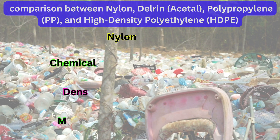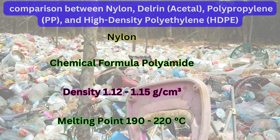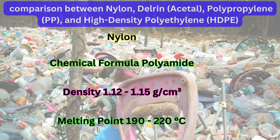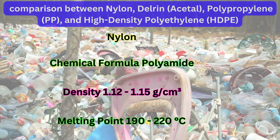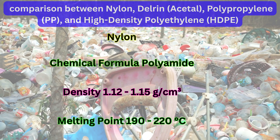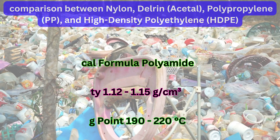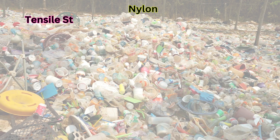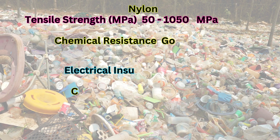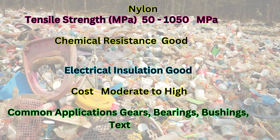Here's a comparison between nylon, delrin, acetal, polypropylene (PP), and high-density polyethylene (HDPE). Nylon — chemical formula: polyamide; density: 1.12 to 1.15 g/cm³; melting point: 190 to 220°C; tensile strength: 50 to 1050 MPa; chemical resistance: good; electrical insulation: good; cost: moderate to high; common applications: gears, bearings, bushings, textiles.